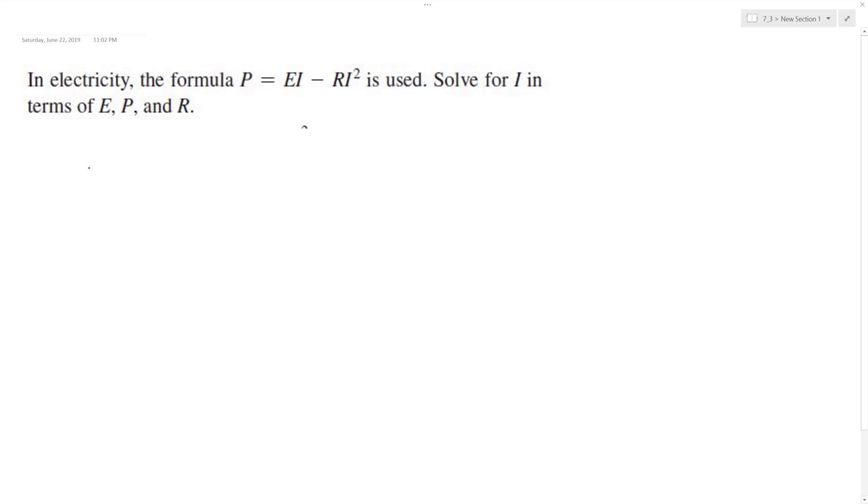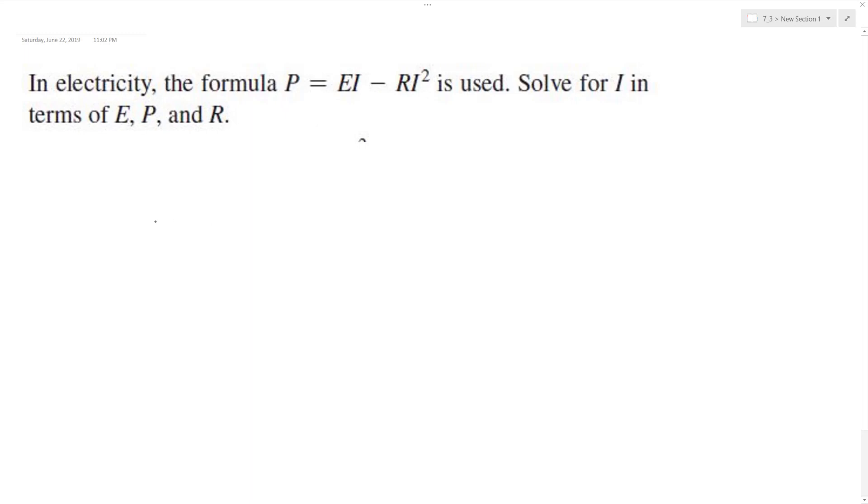So what we're going to do here first, so we've got P. Well, I'm going to write this as EI minus RI squared equals P.